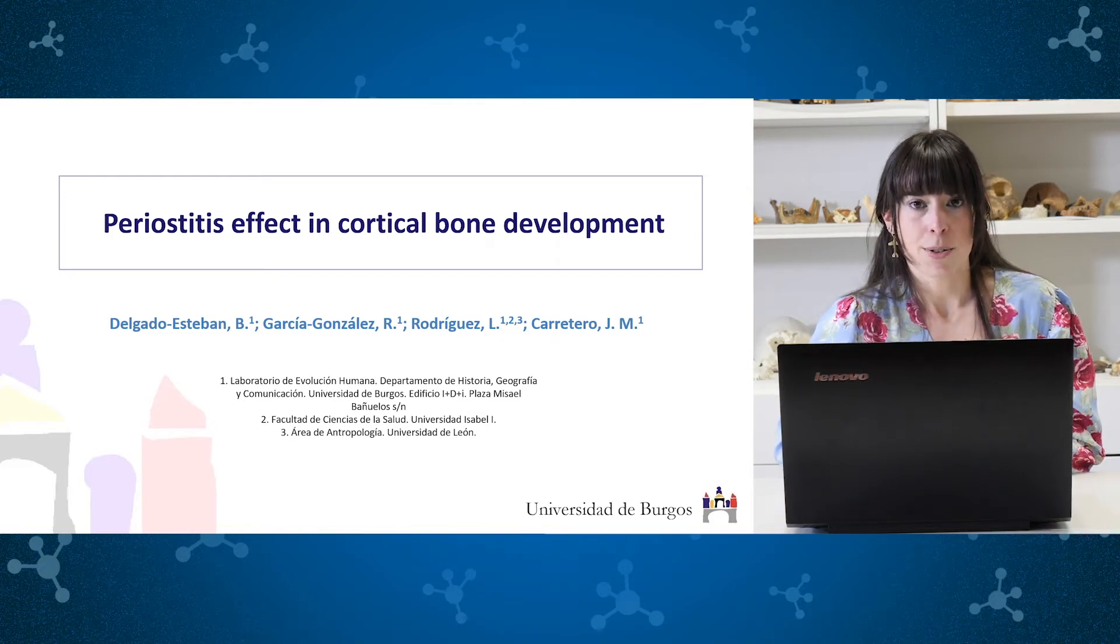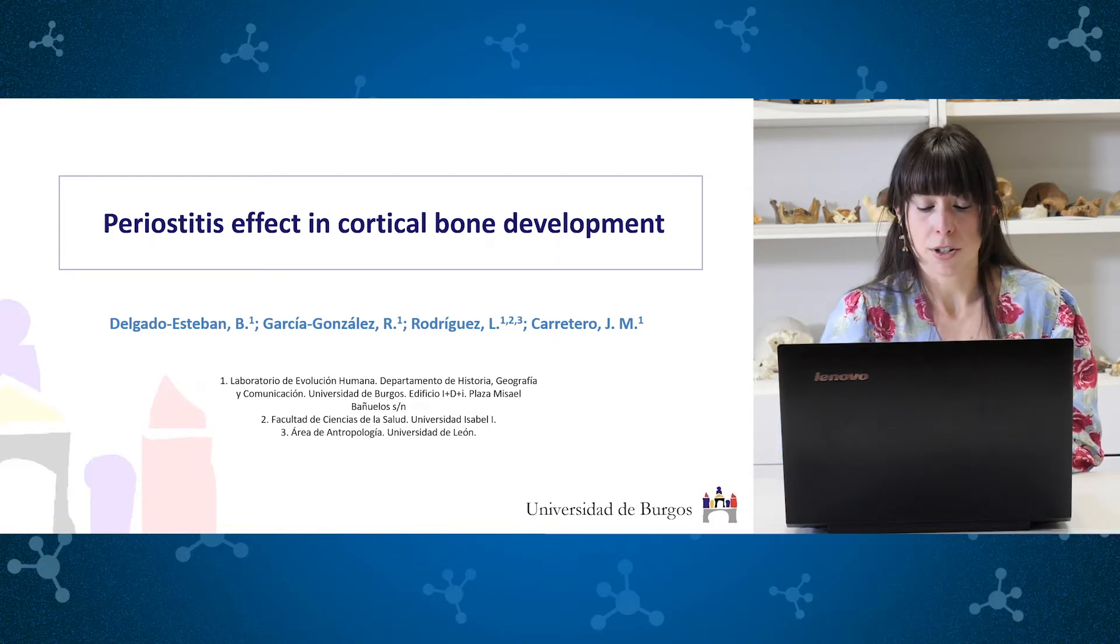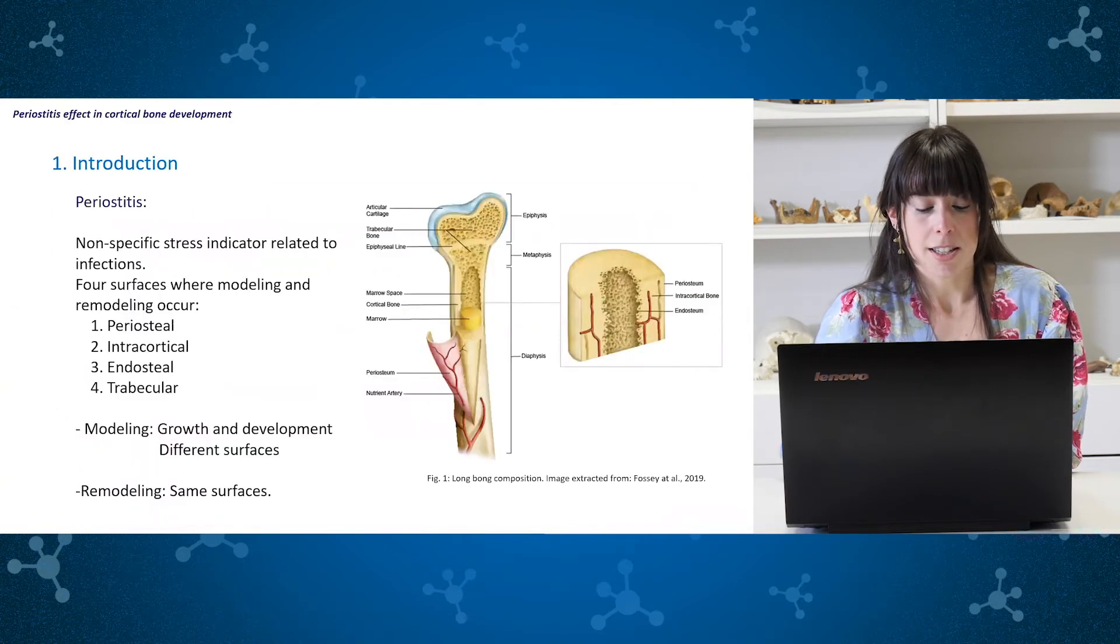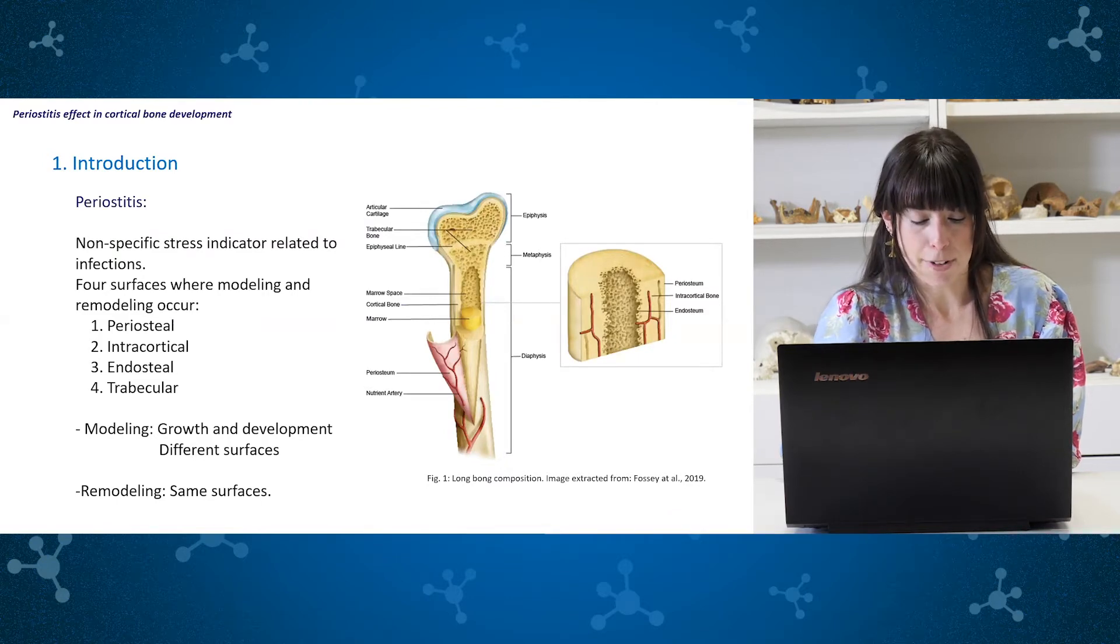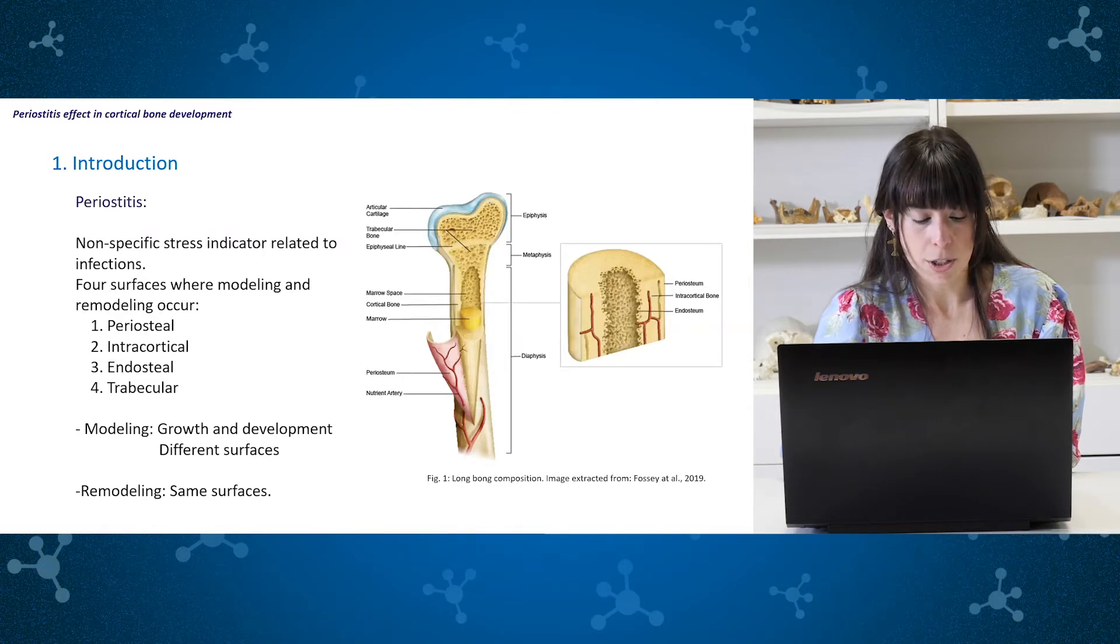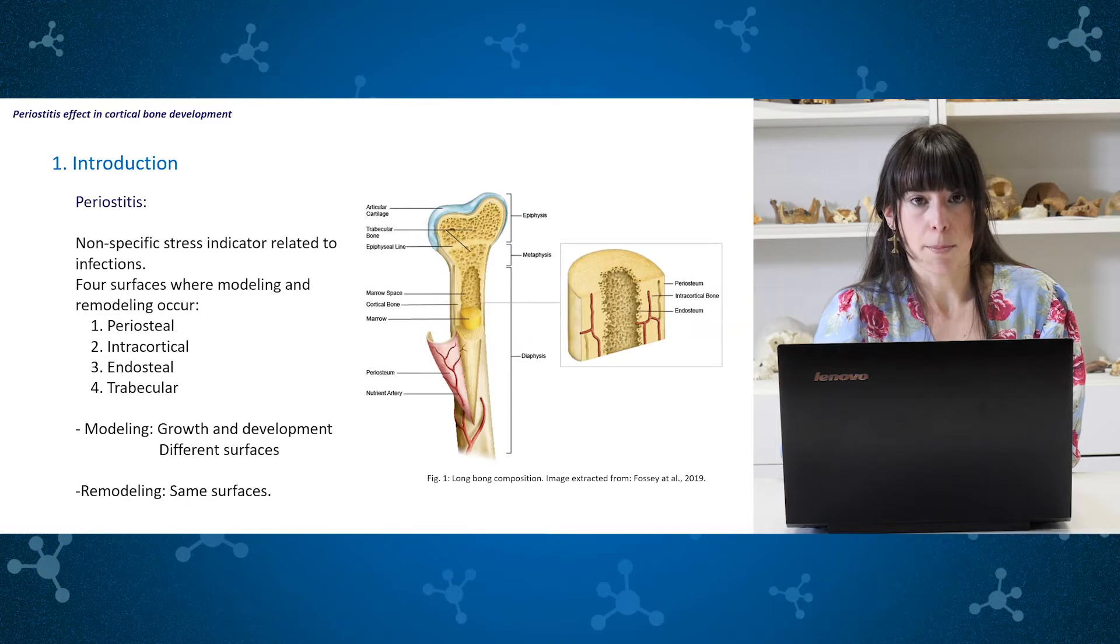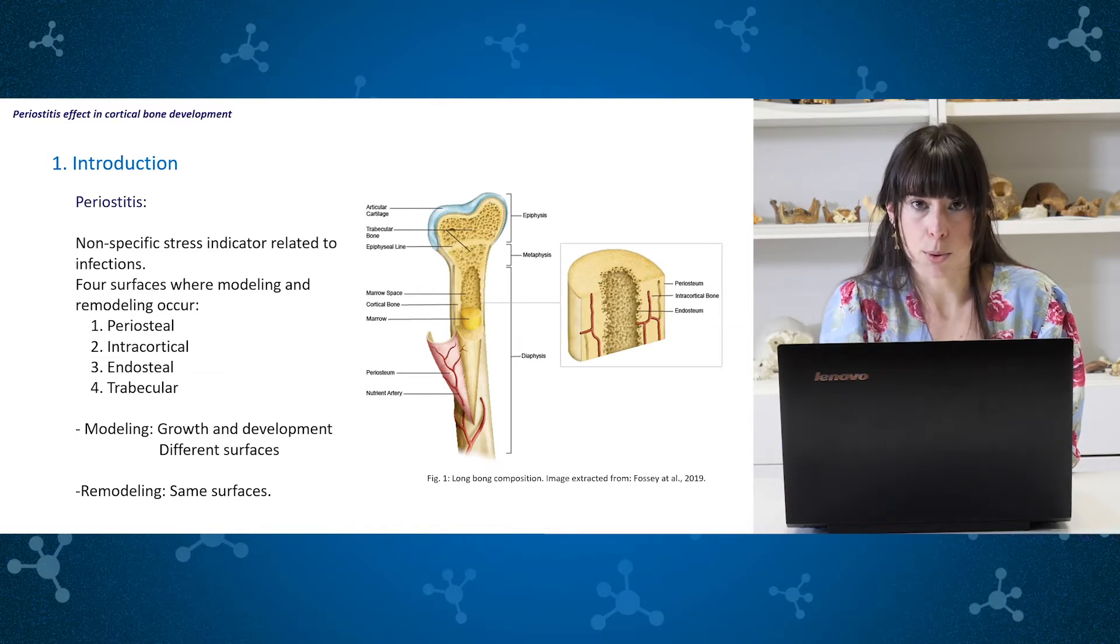The study I bring to this talk titles periostitis effect in cortical bone development. Periostitis is the non-specific stress indicator that affects the periosteum due to an inflammatory process. Bacteria can produce inflammation due to infection, which starts in the soft tissue of the bones and produce bony reactions. Periostitis is related to modeling and remodeling of the bone after a period of infection. It usually affects long bones in human skeleton and is present more commonly in juvenile individuals.